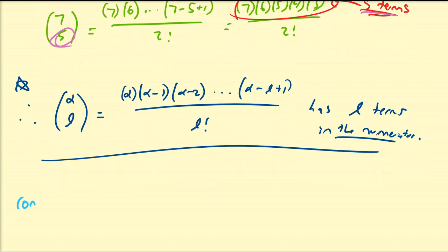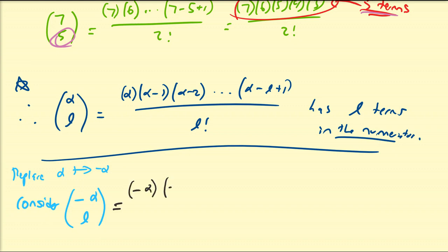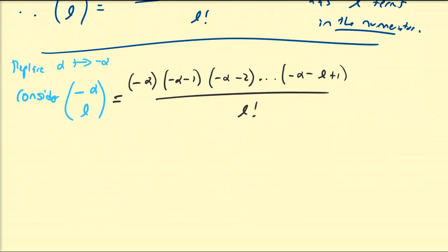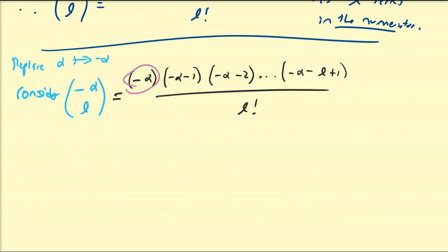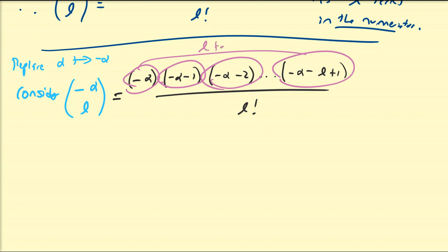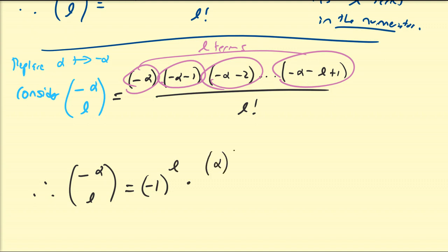Now we're going to consider negative alpha over L, that is, replacing alpha with negative alpha everywhere in the expression. When we do that we have negative alpha times negative alpha minus one times negative alpha minus two, all the way down to negative alpha minus L plus one, all over L factorial. Now I'm going to factor out negative one from every single one of the L terms.